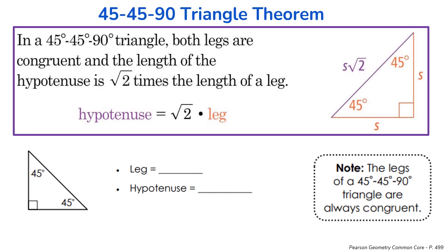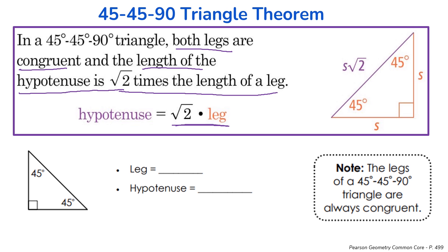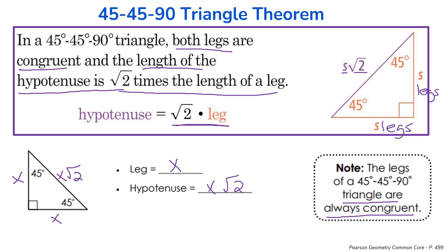The 45-45-90 degree triangle theorem states that both legs are congruent and the length of the hypotenuse is the square root of two times the length of a leg. Remember the hypotenuse is always opposite the right angle. Looking at the figure, if we label our legs as x, then the hypotenuse would be x times the square root of two. Remember that the legs are always congruent in this particular triangle.